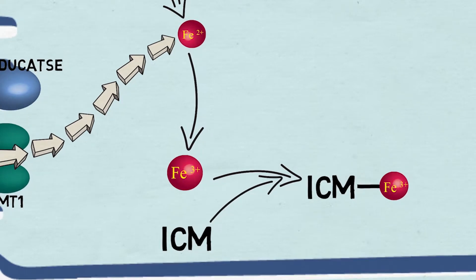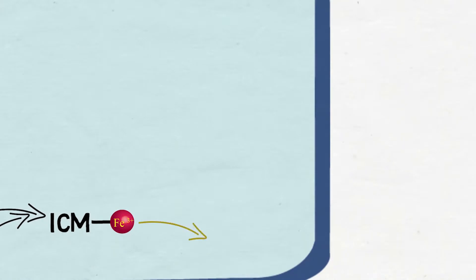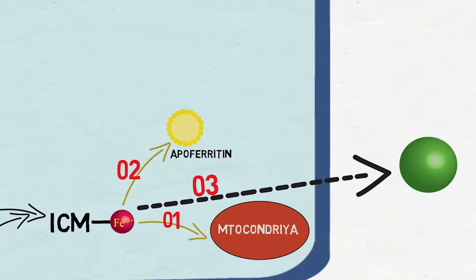Depending on the iron state of the body, the Fe3+ complex delivers iron to mitochondria for its functions, apoferritin for storage as ferritin, or apotransferrin for transport across the body.